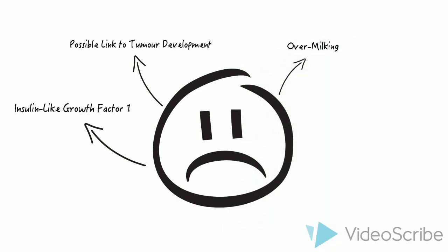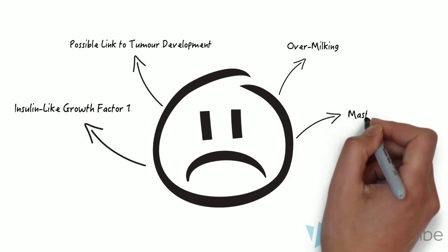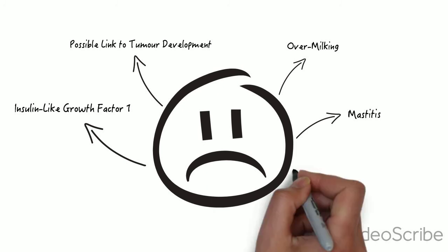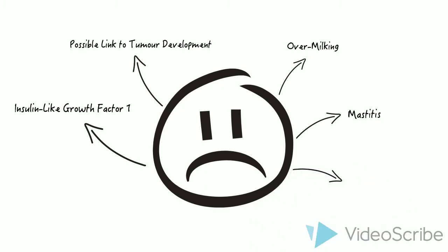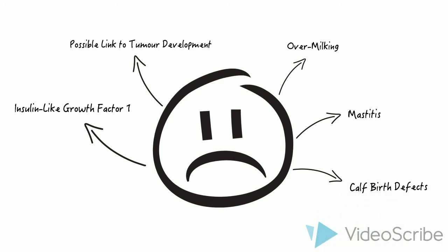The biggest issue with using RBGH is the effect that it has on dairy cattle. Because the cows produce so much excess milk, they need to be milked more often than normal. This can cause them to develop an udder infection known as mastitis. In 1991, a report by Rural Vermont found that cows injected with RBGH had a significantly higher chance of giving birth to deformed calves, implying that RBGH affects the reproductive system.